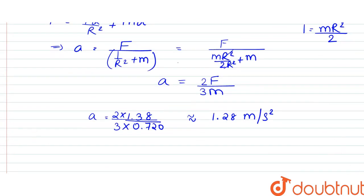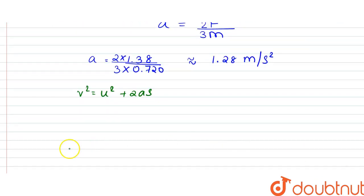v² = u² + 2as, where s is the length of the rails. So v = √(2as) = √(2 × 1.28 × 0.49), which equals 1.12 m/s.